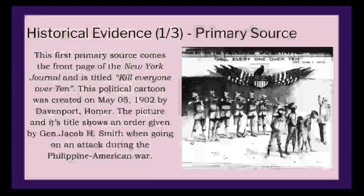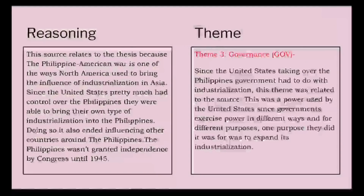Our first piece of historical evidence is a primary source from the front page of the New York Journal, titled 'Kill Everyone Over 10.' This political cartoon was created on May 5th, 1902 by Davenport Homer. The image and title show an order given by General Jacob H. Smith during an attack in the Filipino-American War to kill everyone over the age of 10. As shown in the image, everyone over 10 is being lined up with no exceptions — they are being whipped or shot at. This connects to our thesis because the Filipino-American War was one of the ways North America took control of countries in Asia.